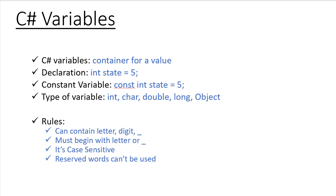Hey everyone, welcome to Coding Simplified. Now we'll see what C# variables are. We'll understand what variables are in C#, how we initialize them, and what the different types of variables are. Variables are basically the container for a value. If you want to store a character, a number, or a word, you store it in something — and that something is a variable.